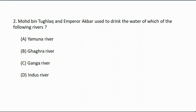Question number two: Mohammed bin Tughlaq and Emperor Akbar used to drink the water of which of the following rivers? Option A: Yamuna River, option B: Gagra River, option C: Ganga River, option D: Indus River. The correct answer is option C, Ganga River.